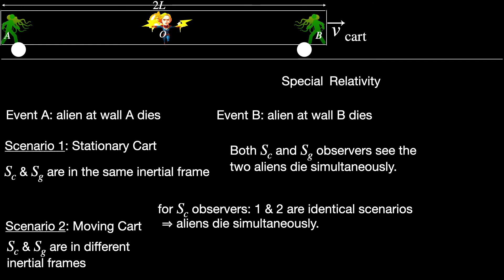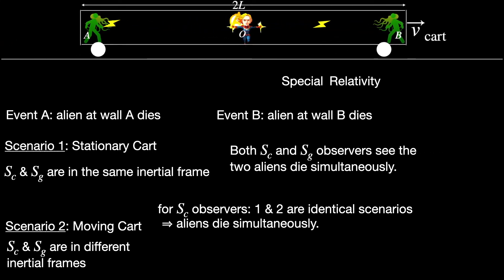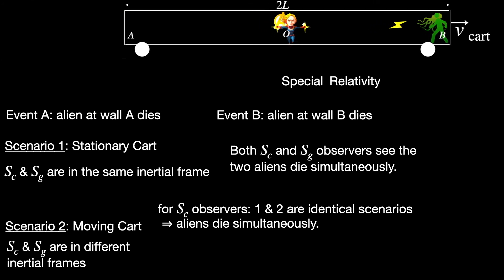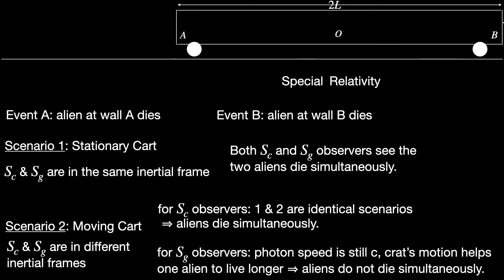Now the group on ground see the cart move with speed V_cart to the right, and photons being photons do not have any concern for the cart's motion, and their speed appears to be C in both directions even with respect to the ground observers. But due to the cart's motion, the observers on ground see the alien on the right, that is at wall B, as a target moving away from the photon blast, and the one to the left, that is at wall A, moving towards it. Naturally the alien to the right gets to live a little longer as the blast takes a little longer to reach it. Here is how the situation appears to the ground observers. Thus you see, in the moving cart scenario, the ground observer sees a different reality: they see the aliens dying not simultaneously but one after the other.